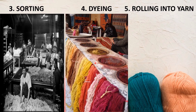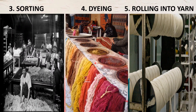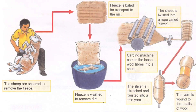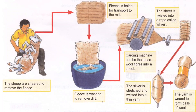The last step is rolling into yarn. Here we make yarn out of the fiber, and from this yarn different fabrics are made. This is how wool is processed.